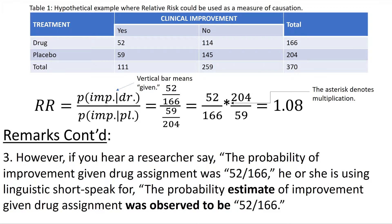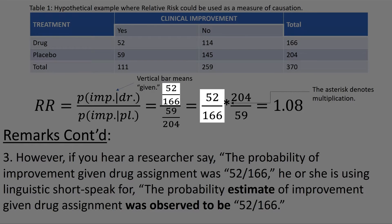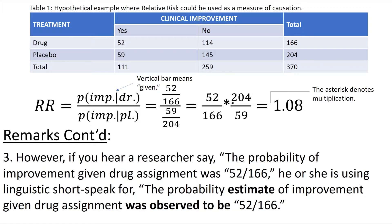However, if you hear a researcher say the probability of improvement given drug assignment was 52 divided by 166, he or she is using linguistic shortspeak for: the probability estimate of improvement given drug assignment was observed to be 52 divided by 166.